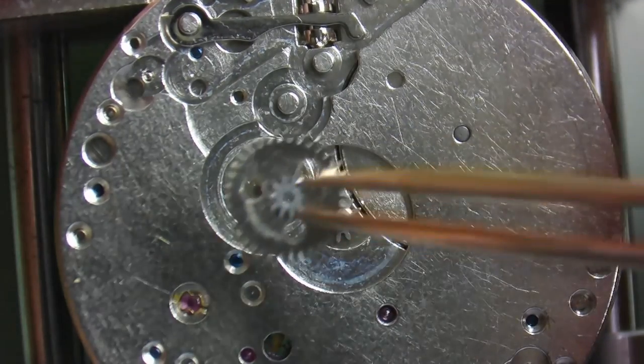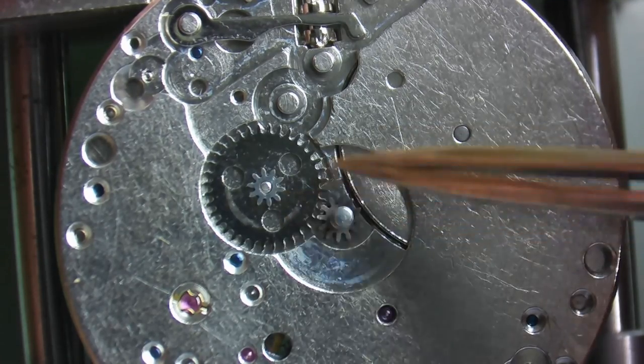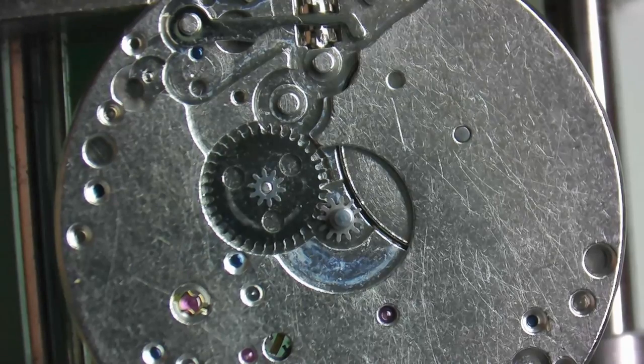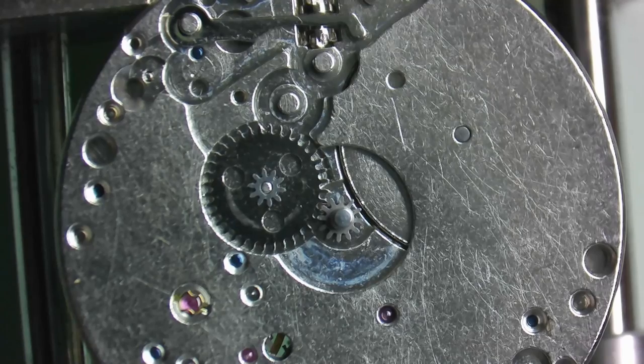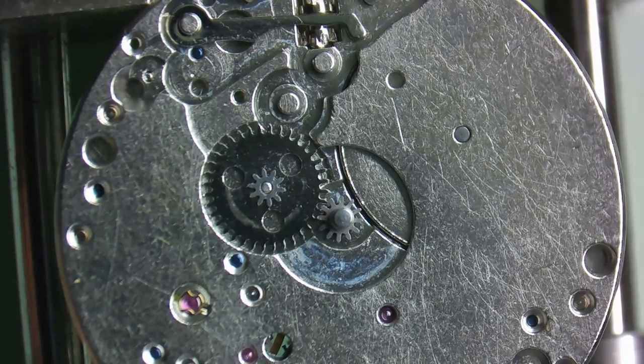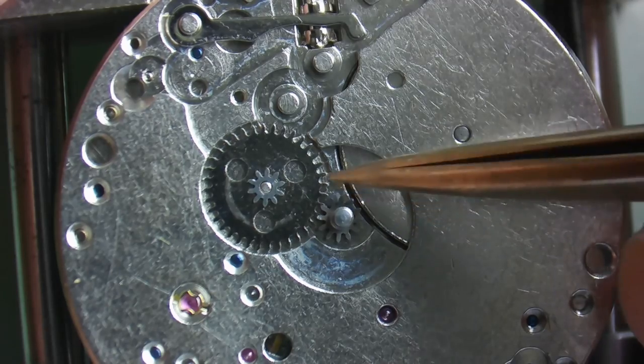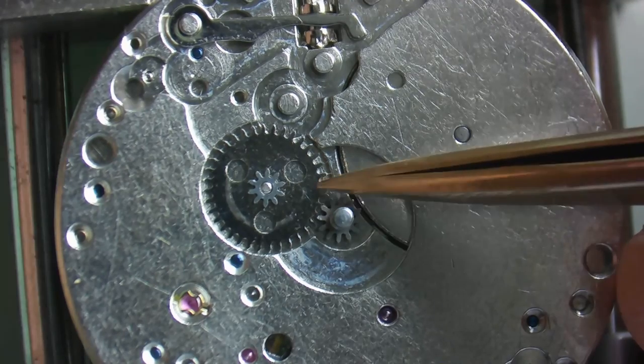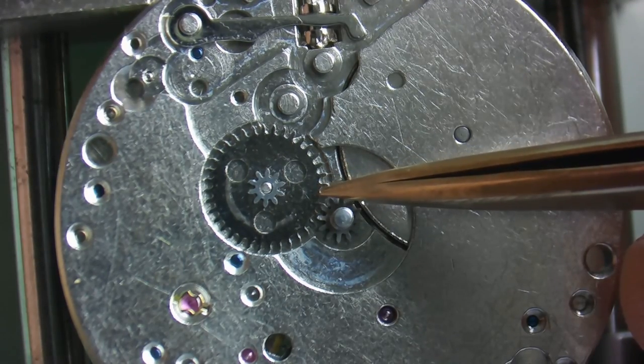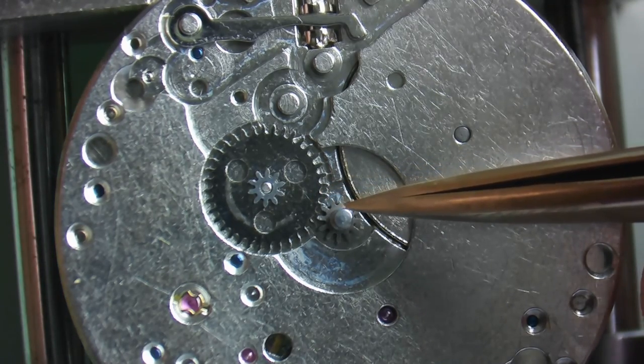Our next piece going on is the minute wheel. Now the minute wheel serves two purposes. The first is to reduce the rotation or speed of the hour wheel so that it is only going to make one revolution every 12 hours. So when you look at this, you'll notice that you have a pinion driving a wheel, so this would be a reduction ratio. The other purpose of the minute wheel is to turn the cannon pinion and the hour wheel when you're setting the hands.